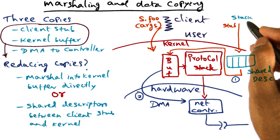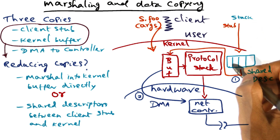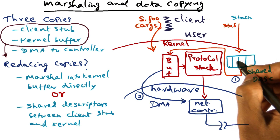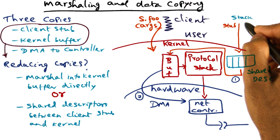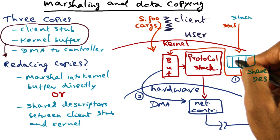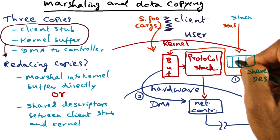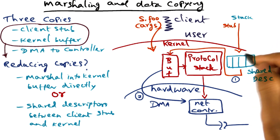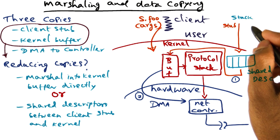For instance, let's say that the argument for the call has four parameters. Then the descriptor has four entries, and each entry is saying: this is the starting point of a particular data item and this is the length of the data item. This is the starting point of the second data item and this is the length. Third data item. Fourth data item. The kernel doesn't have to know the semantics of these data items.